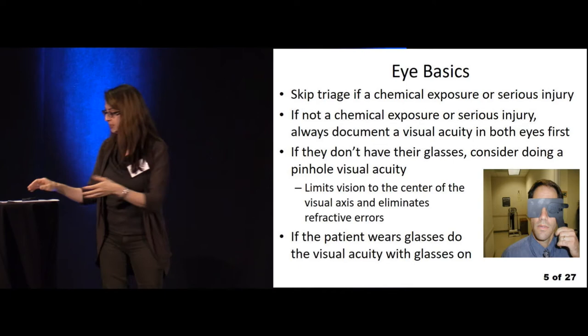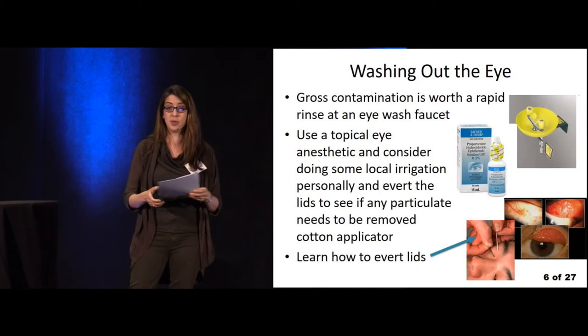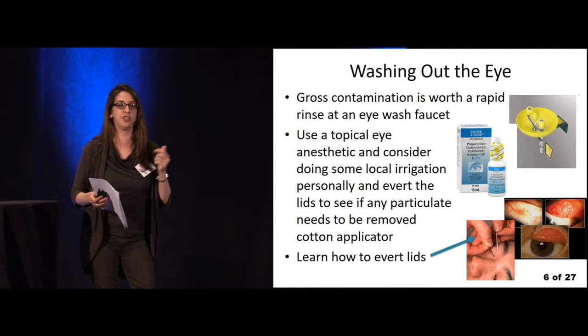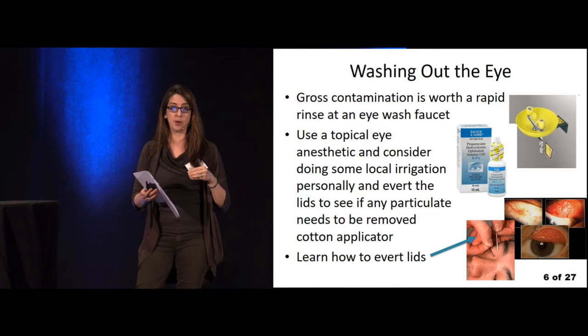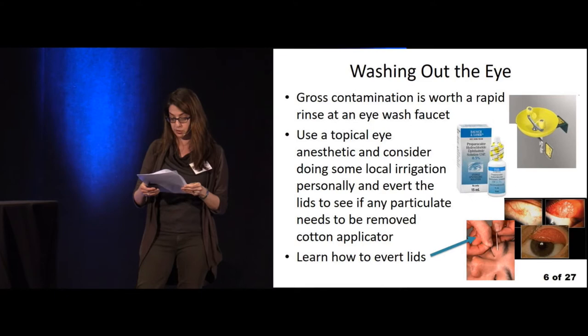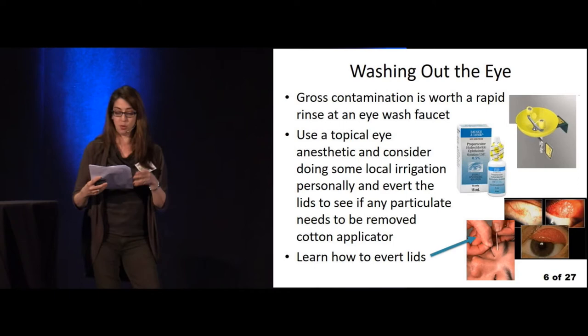Now let's talk about chemical exposure to the eye. Use pH paper to assess initially, and as you irrigate it will tell you how well you're doing and how much more to continue. Irrigate until you normalize their pH to about 7 to 7.4.